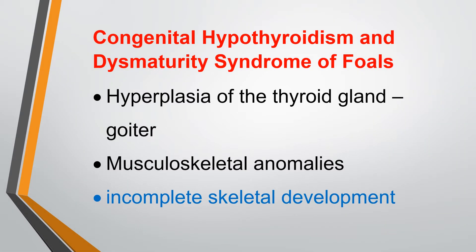The goitrous condition occurring in foals is named congenital hypothyroidism, and another name is dismaturity syndrome of foals. There is hyperplasia of the thyroid gland. The cause is congenital. The symptoms of the syndrome are musculoskeletal anomalies, especially incomplete skeletal development — foals are not maturing properly, hence dismaturity syndrome.